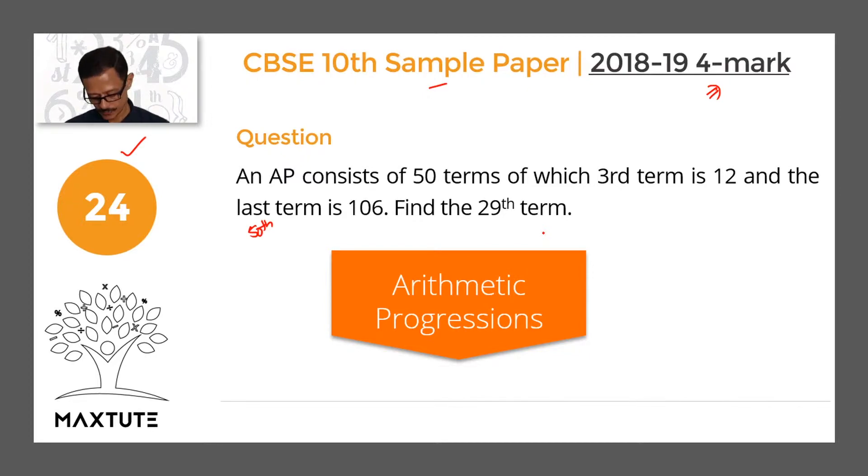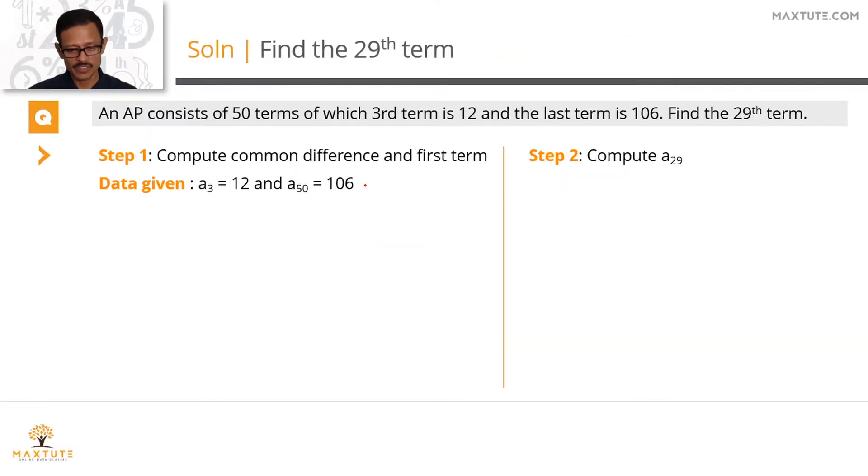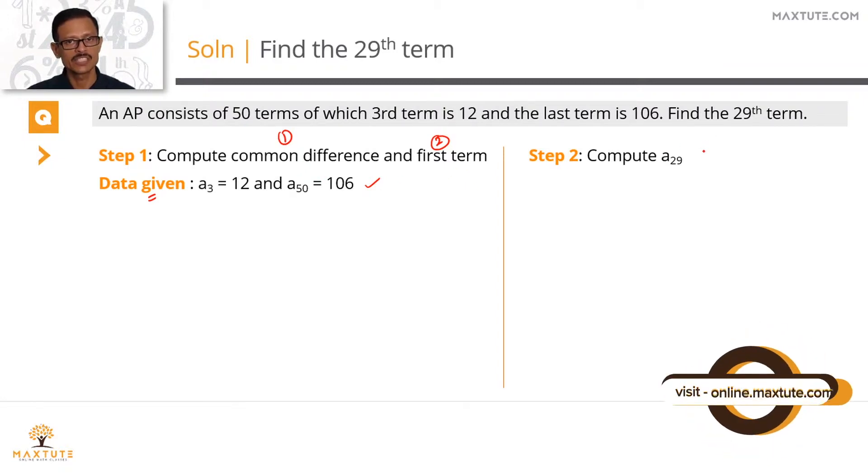Solving this question entails two steps. In the first step, we'll use this information that the third term is 12 and the last term a50 is 106. We're going to use this data given to us to compute the common difference and the first term. Once you've done that, we'll take those two values and plug it into the formula to find out the value of the 29th term, which is a29.